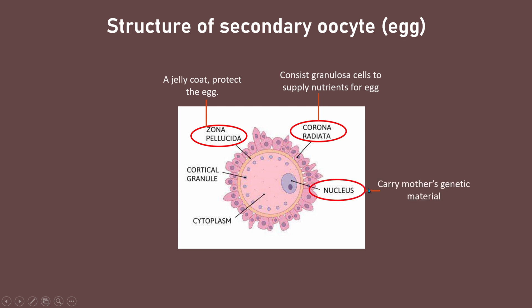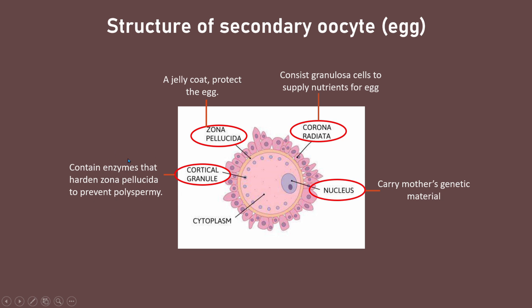The nucleus is where the chromosomes — the mother's genetic material — are located. The cortical granule is a small vesicle containing enzymes that will harden the zona pellucida to prevent the entry of more than one sperm, a condition known as polyspermia. We will discuss this further in the fertilization process.